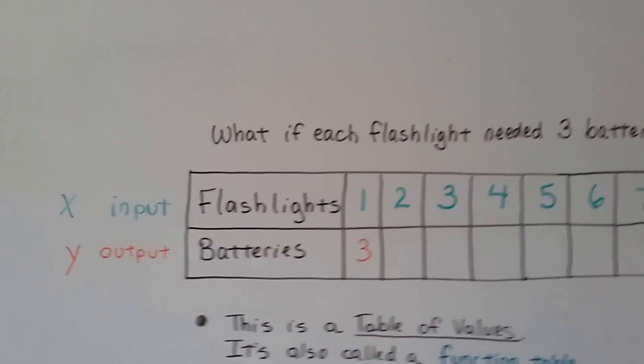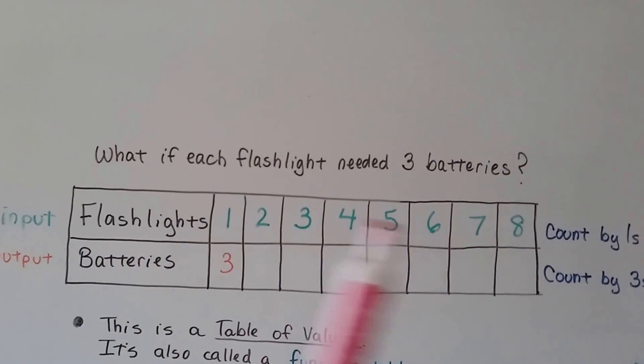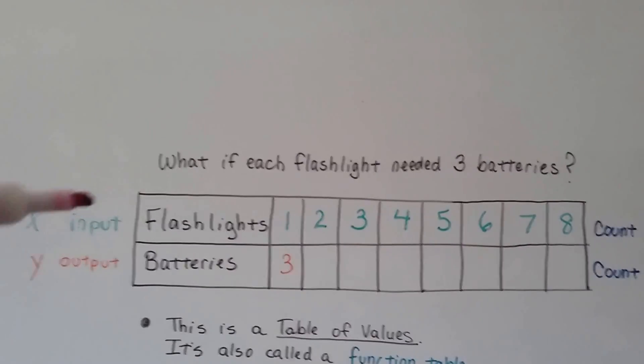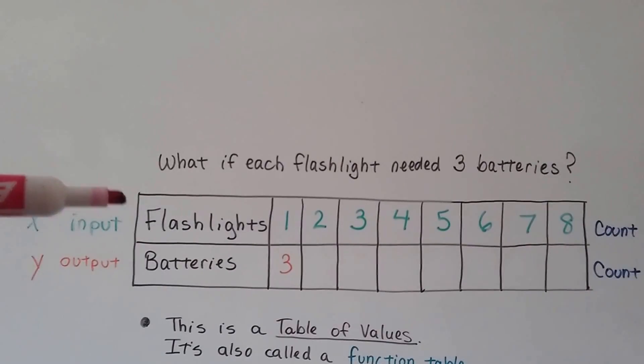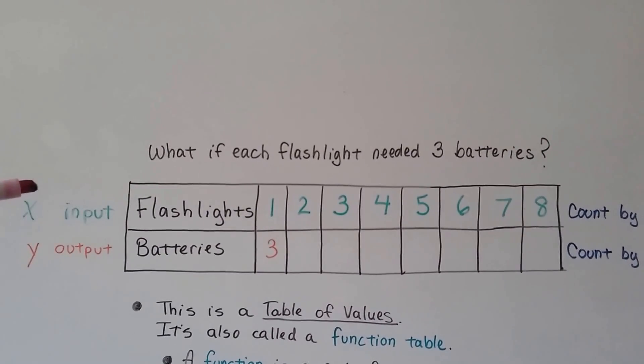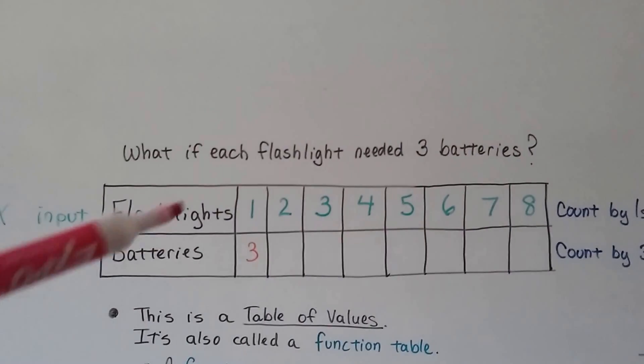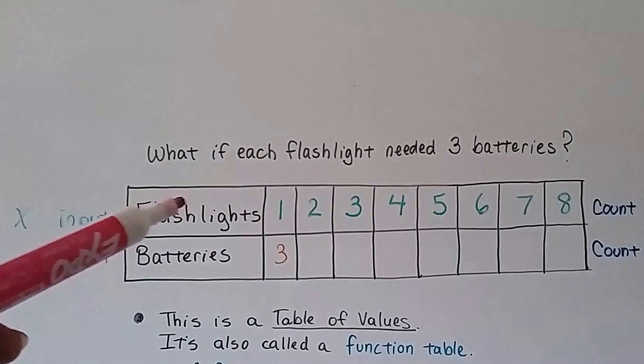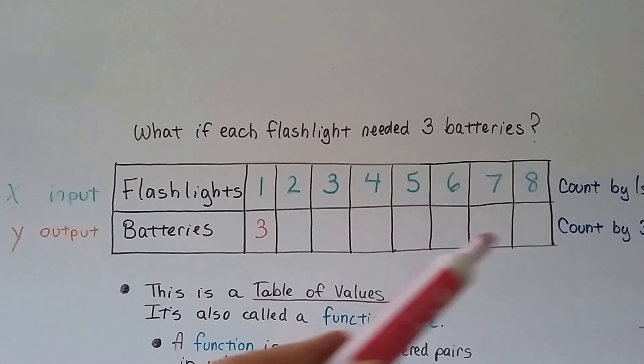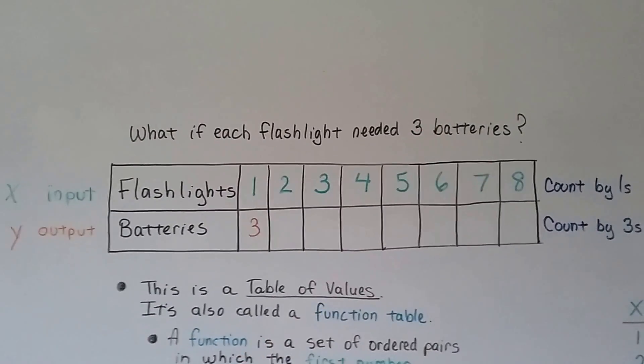Now, what if each flashlight needed three batteries? Well, did you know that this table is input for the flashlights and output for the batteries? It would be like X is the flashlights and Y is the batteries. We're going to count by ones here for the flashlights. We're going to count by three for the batteries because they each need three.